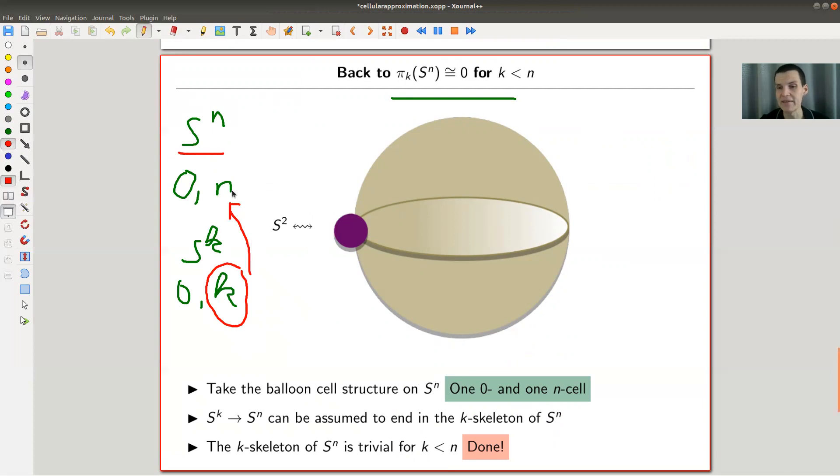So it needs to be contained in the k-cell of S^n. And the k-cell of S^n is still zero because it just doesn't change from zero up to the point of n. So this is really saying that we can assume that my whole sphere, up to homotopy, actually ends in the zero skeleton.